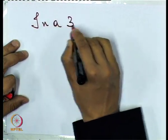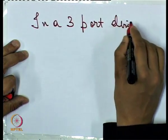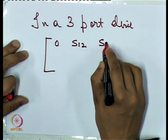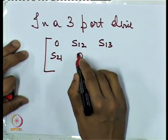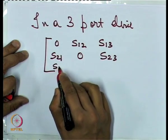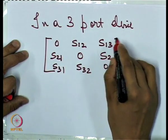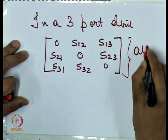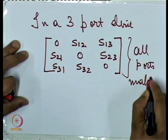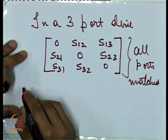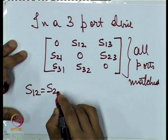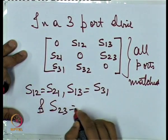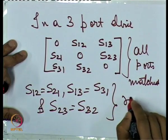In a 3-port device, if all the ports are matched, then our S-parameter matrix will look like this, with all diagonal elements equal to zero. Now this is the condition for all ports being matched. Then if it is reciprocal, we have S12 equal to S21, S13 equal to S31, and S23 equal to S32. This is the condition for reciprocity.